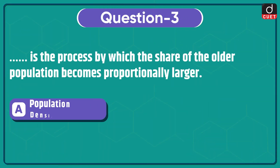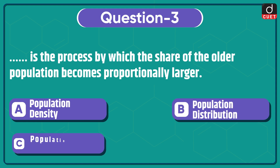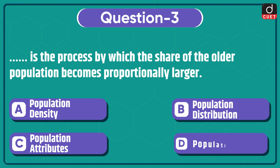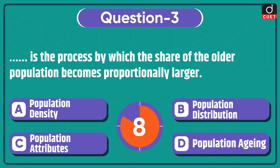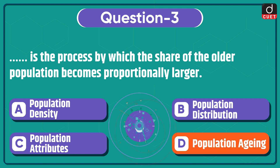Next question: dash is the process by which the share of the older population becomes proportionally larger — population density, population distribution, population attributes, or population aging? The correct answer is option D, population aging.